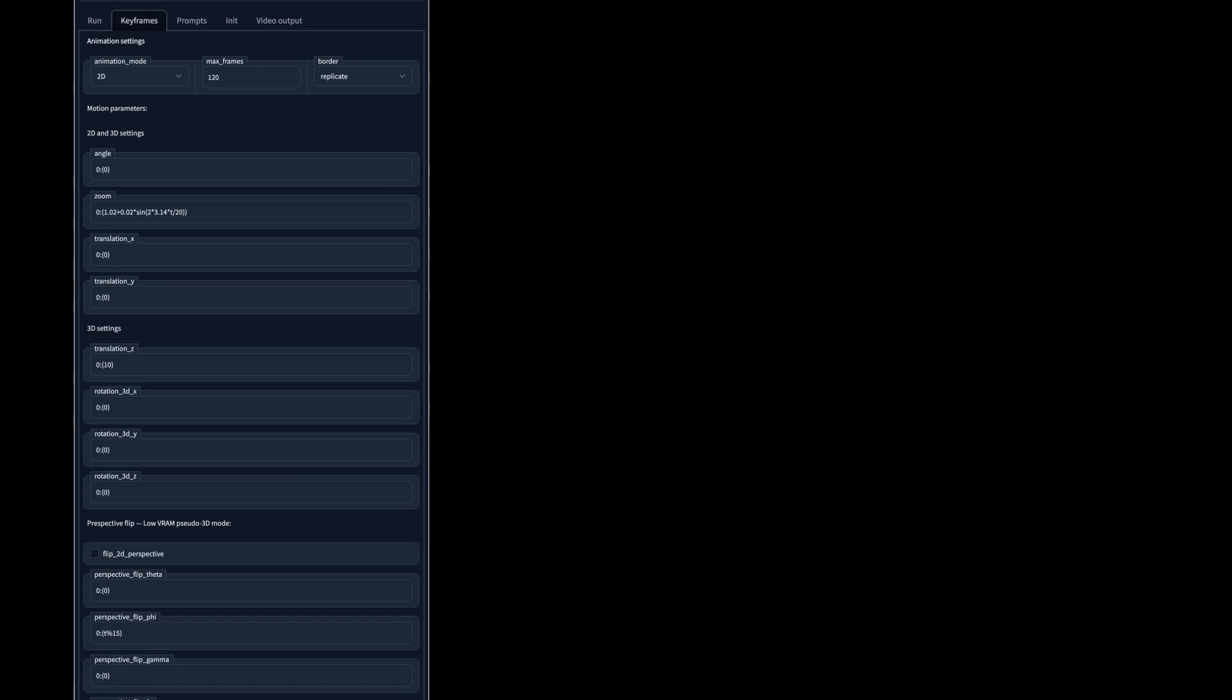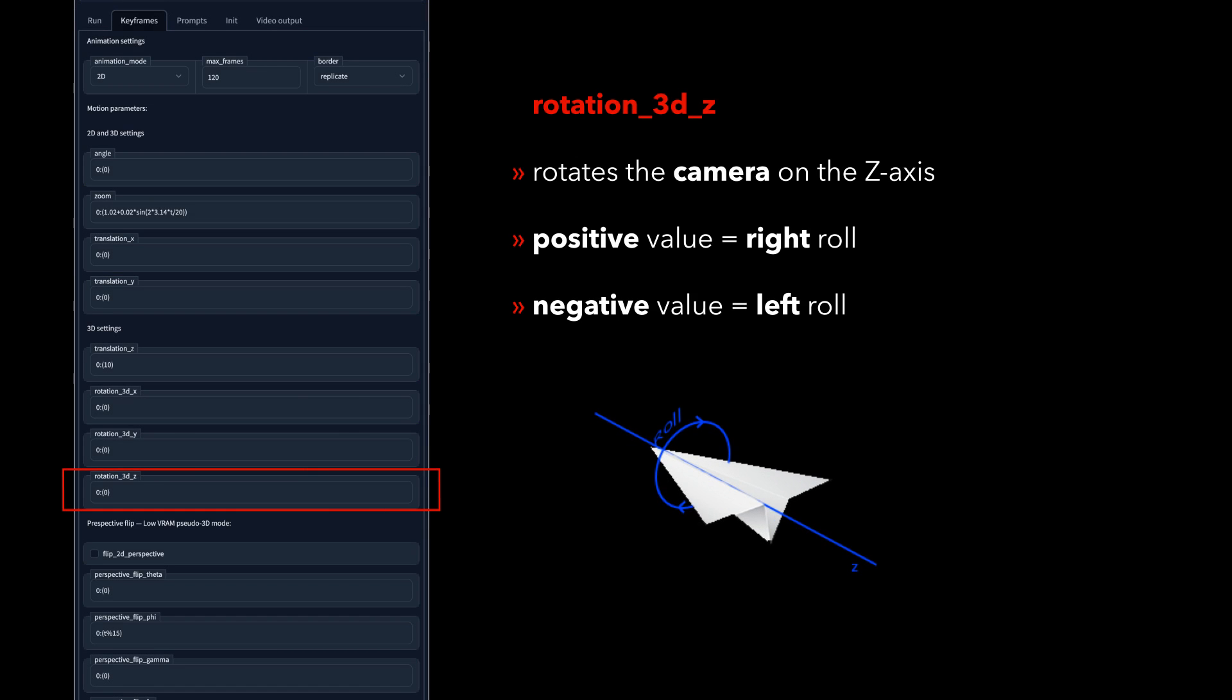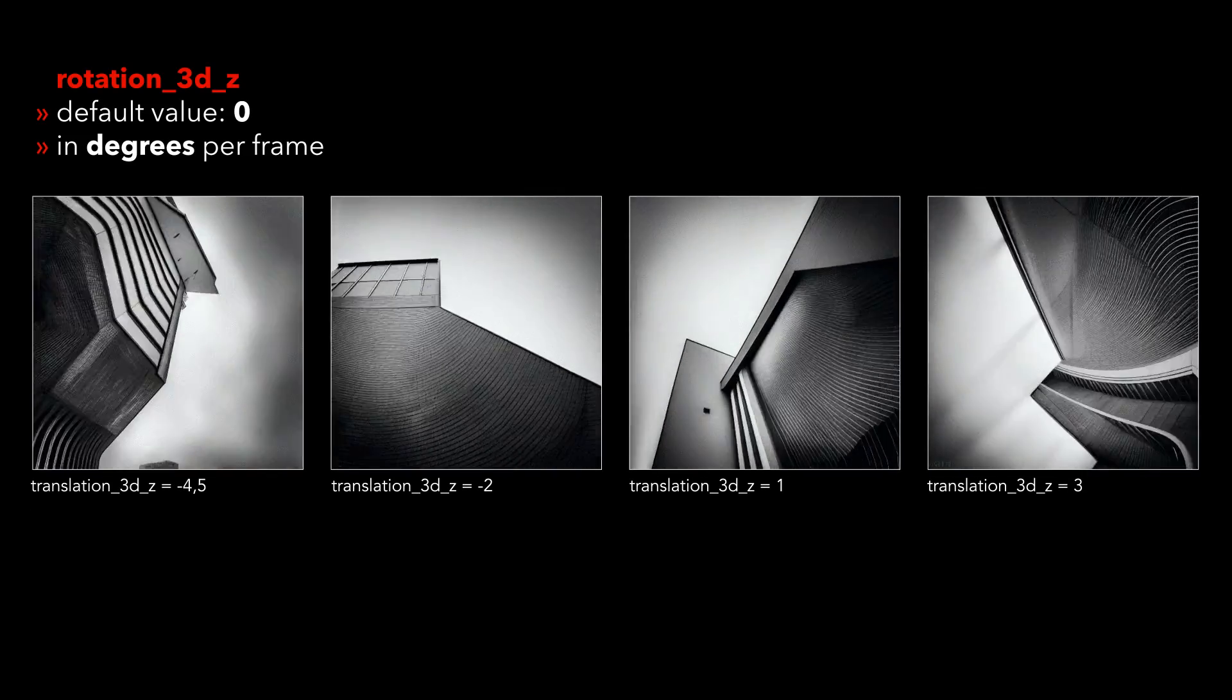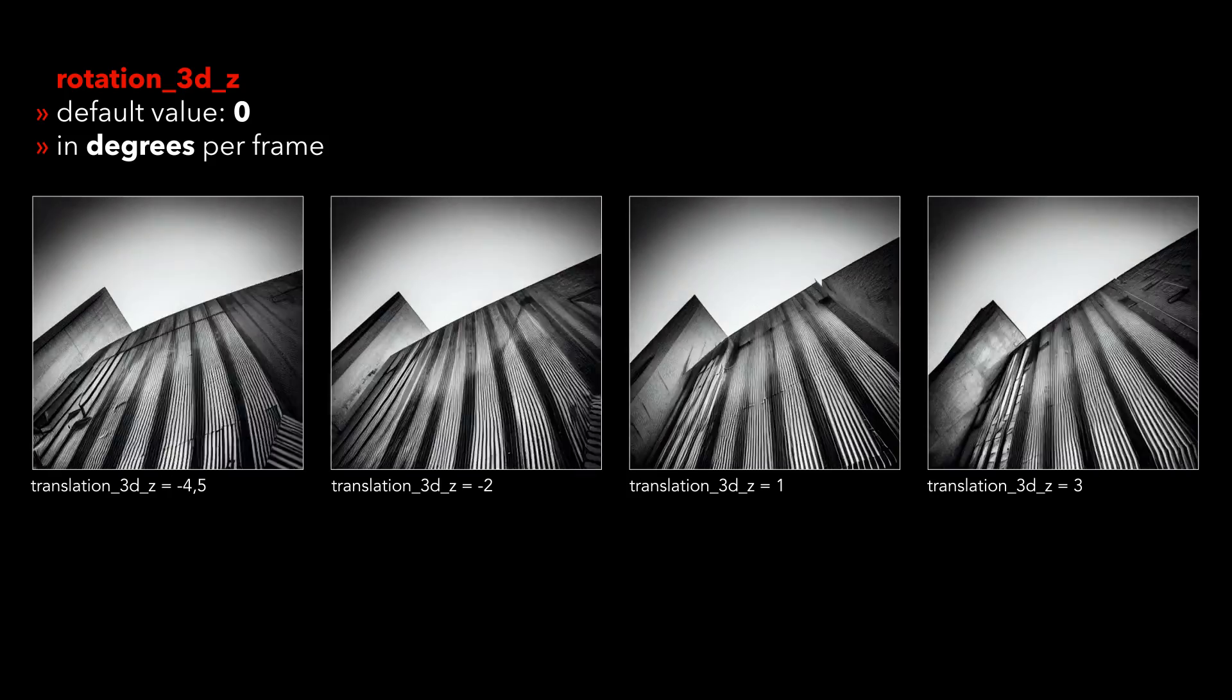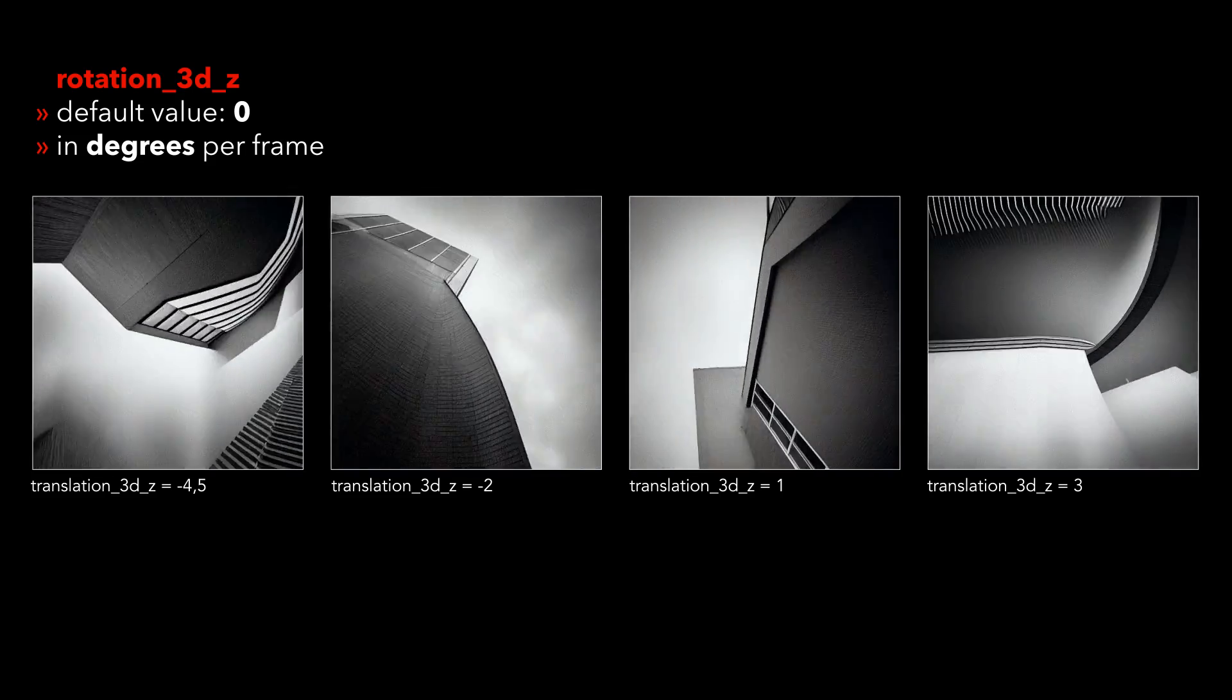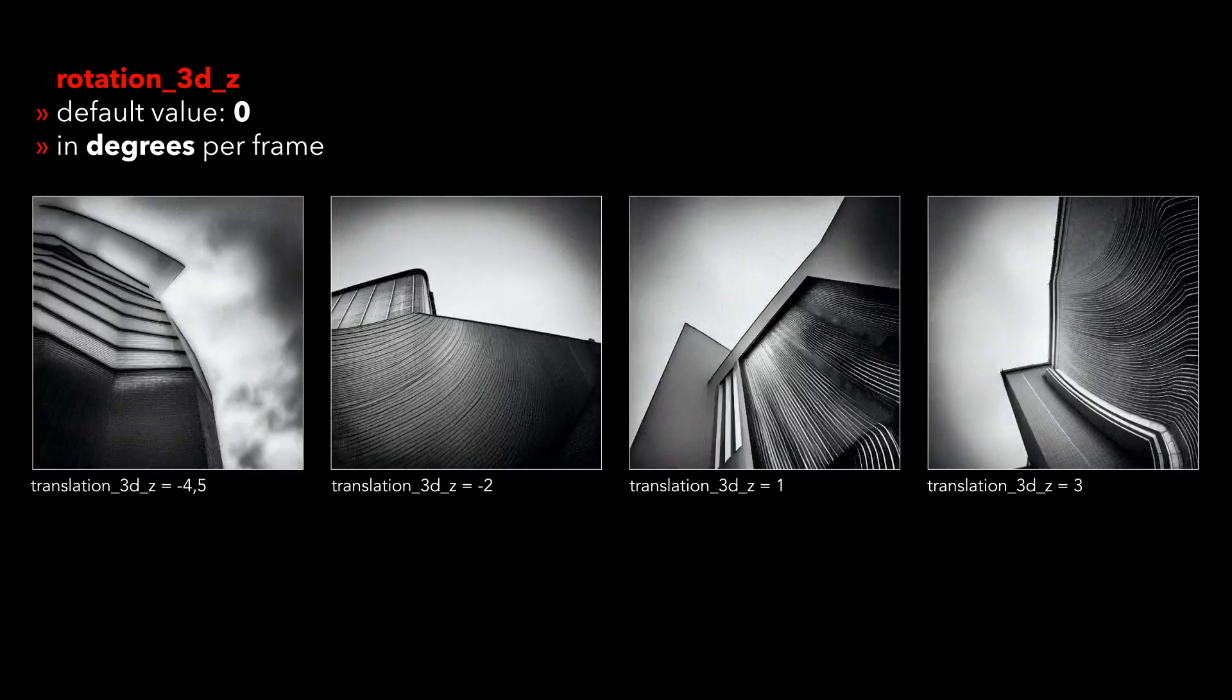Rotation 3D z will do a camera roll, similar to the angle parameter in 2D mode, fixated on the z-axis. Positive value, right rotation, negative value, left rotation. Compared to the pseudo 3D parameters in 2D mode, the 3D rotations do not force a perspective change effect.